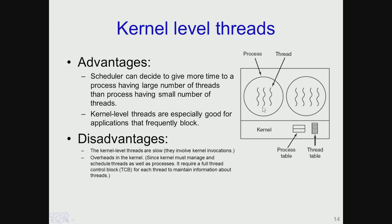For example, the scheduler could make smarter decisions about how much time should be allocated to a process depending on the number of threads it is running — giving processes with a larger number of threads more time to execute. Another advantage is that since threads are managed by the kernel, blocking on system calls is not required. When one thread executes a system call, the other threads in that process can continue execution without having to block until the first thread completes its invocation.